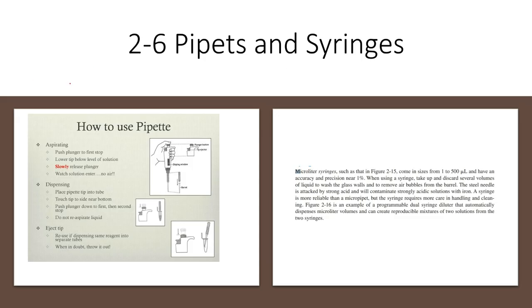Pipets and syringe. How to use a pipet? You need to do three things: aspirate, dispense, and eject the tip. First, push the plunger into the first stop. Then lower the tip below the level of solution. Then slowly release the plunger and watch solution enter. Make sure there's no air.